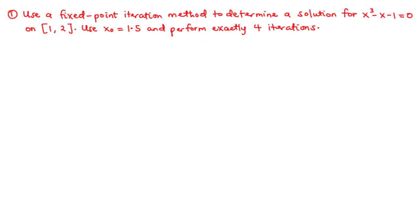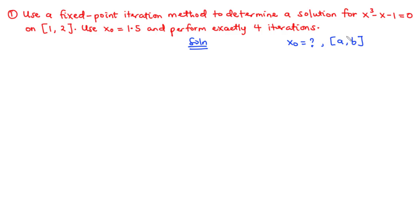For our first example, we are asked to use the fixed point iteration method to determine a solution for x³ - x - 1 = 0 on the closed interval [1, 2], using x₀ = 1.5 and performing exactly four iterations. The most important thing is knowing x₀. If x₀ is not given but the closed interval [a, b] is, then x₀ can be any value inside [a, b], or we can use the formula x₀ = (a + b) / 2.